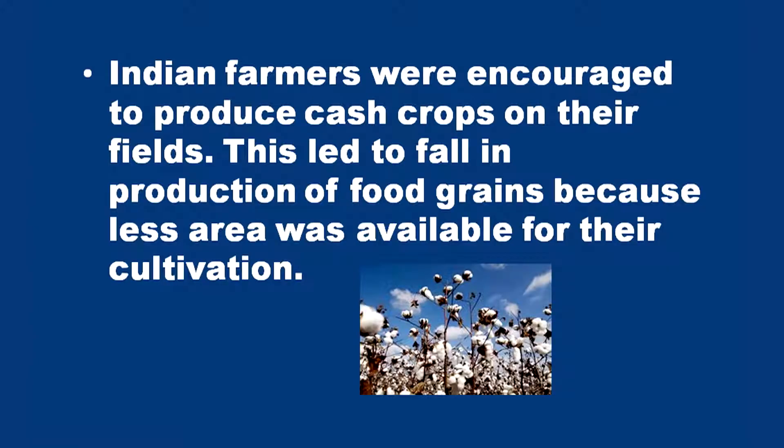The Indian farmers were encouraged to produce cash crops on their fields. This led to a fall in the production of food grains because less area was available for their cultivation. More and more land was under cultivation of cash crops, which resulted in a decrease in the area for food crops, also leading to a decrease in food grain production.